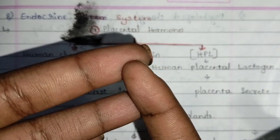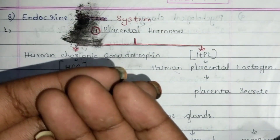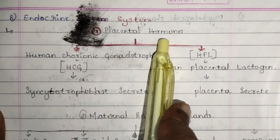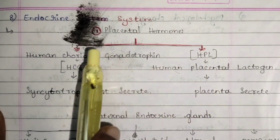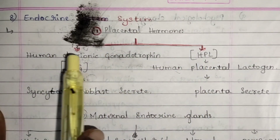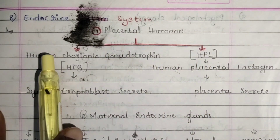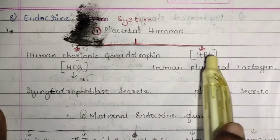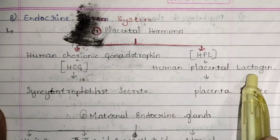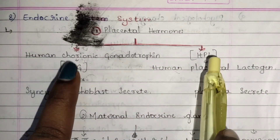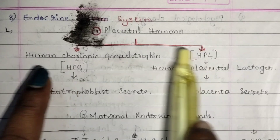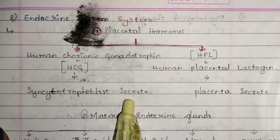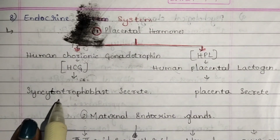Now we're going to see what changes are caused by these hormones. First, placental hormones. From placental hormones, there are two types produced: one is HCG, that is Human Chorionic Gonadotropin, and HPL, Human Placental Lactogen.